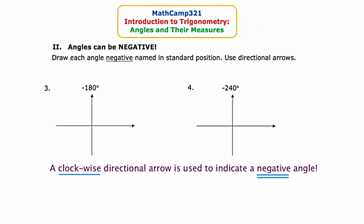Now we're on slide three for a brief discussion about negative angles. The directions say: draw each negative angle in standard position and use directional arrows. Note at the bottom: a clockwise directional arrow is used to indicate a negative angle. The first angle is negative 180 degrees. I'll draw the initial side along the positive x-axis, then the terminal side — straight down would be negative 90, and another 90 gives me negative 180. Without a directional arrow this could be read as either positive or negative 180, so I start at the initial side and go clockwise to the terminal side to indicate negative 180.